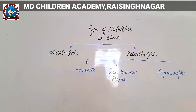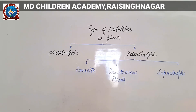Now the next type of nutrition is heterotrophic. Hetero means other. These are organisms or plants that cannot prepare their own food, cannot nourish themselves, and are dependent upon others for their food. Such type of nutrition is called heterotrophic mode of nutrition, which we will study about in this video.